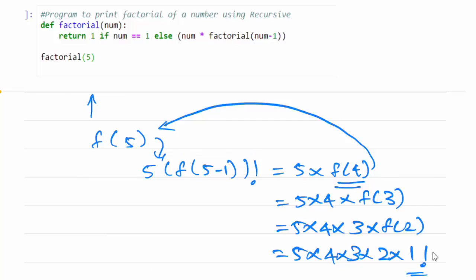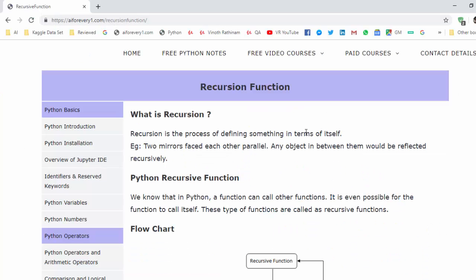This is how the program execution will go on. We are calling our own function multiple times. Till the condition is true this function will be executed. Once the condition becomes false this will come out of the loop. Hope you understood what is a recursion function.